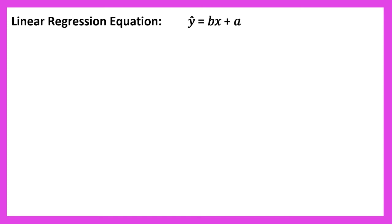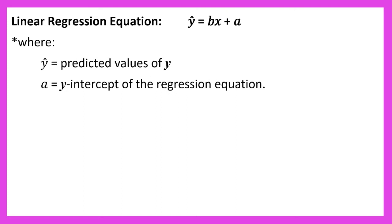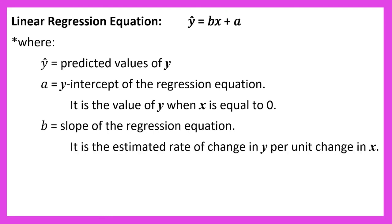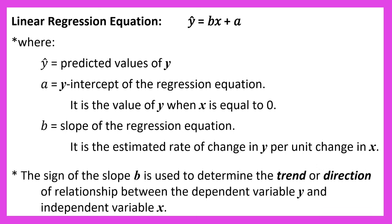In our previous discussion, we calculated the values of slope and y-intercept and came up with the linear regression equation y-hat equals bx plus a. Where y-hat represents the predicted values of y. a is the y-intercept of the regression equation — it is also the value of y when x is equal to 0. b is the slope of the regression equation; it is the estimated rate of change in y per unit change in x. It is important to note that the sign of the slope b is used to determine the trend or direction of relationship between the dependent variable y and the independent variable x.